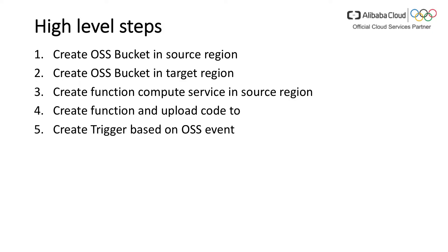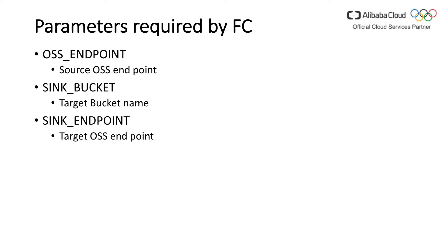Here are the high-level steps. First, create a bucket in the source region, then create a bucket in the target region. Next, create a Function Compute service in the source region, create a function, and upload the code. Then create a trigger based on the OSS event. The function accepts three parameters: the OSS endpoint (the source OSS endpoint address), the sync bucket name (the target bucket to replicate to), and the sync endpoint (the target OSS endpoint, which can be the same or a different region).